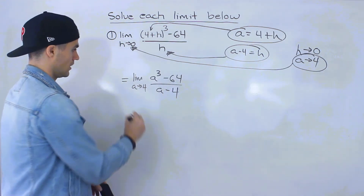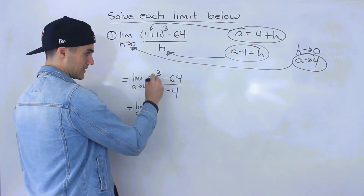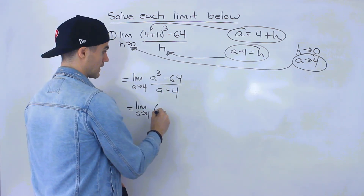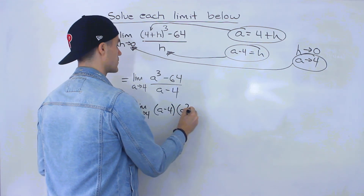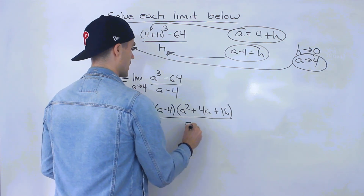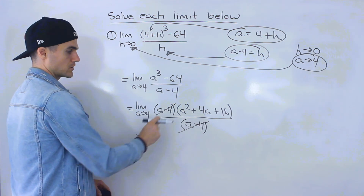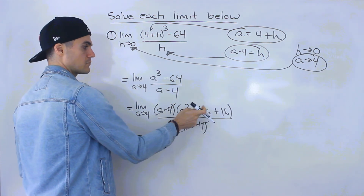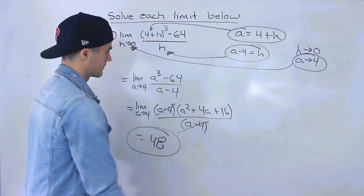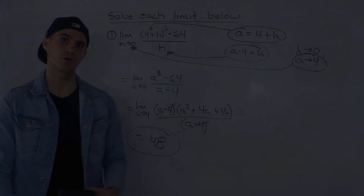So a cubed minus 64 is a difference of cubes. When you factor that, you get (a minus 4) times (a squared plus 4a plus 16), all over (a minus 4). The (a minus 4) terms cancel out, and now we plug in 4 for all the a's: 16 plus 16 plus 16, which again gives us 48. So three different methods, all giving an answer of 48. My preferred method is number two.